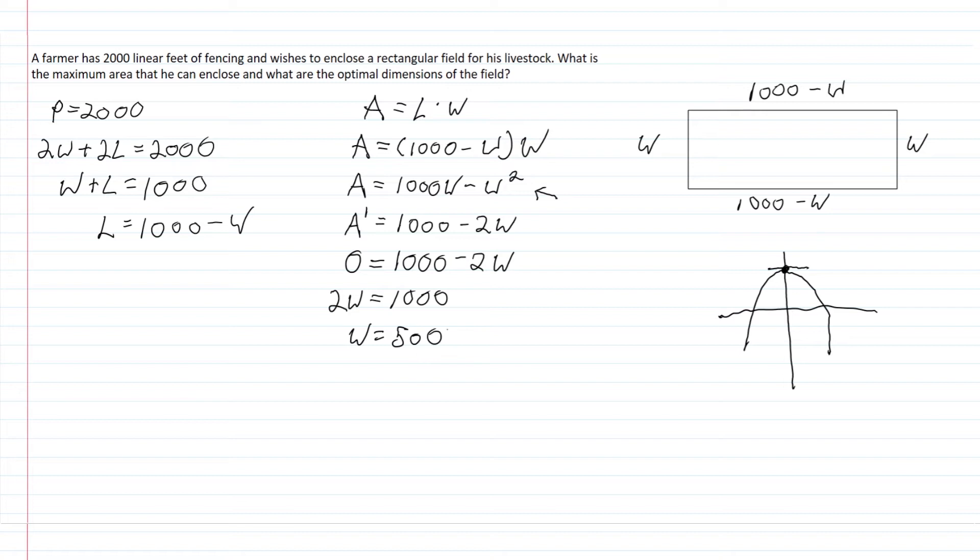If we plug this back into our perimeter equation, we know that 2 times 500 plus 2 times the length equals 2,000. We can divide this by 2 to get 500 plus L equals 1,000. Subtract 500 from both sides, and we find the length is also 500.